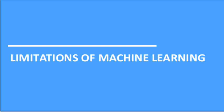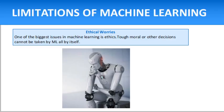Now, the first limitation is ethical worries. One of the biggest issues in machine learning is ethics. Trusting and relying on algorithms for automation, analysis, and decision-making is good, yet there are a few challenges. Since these algorithms may be vulnerable to biases at the development level, especially since they are trained by human beings, tough moral or other decisions cannot be taken by machine learning all by itself.